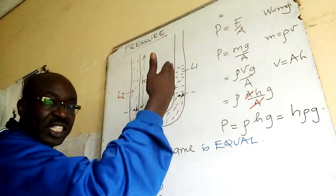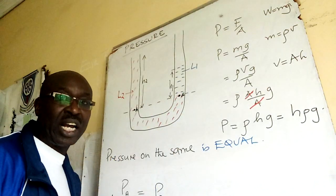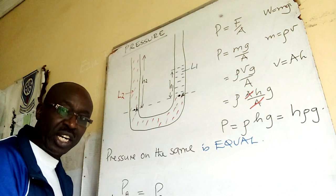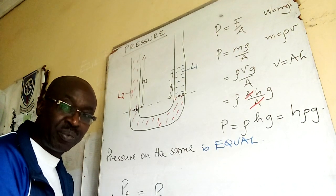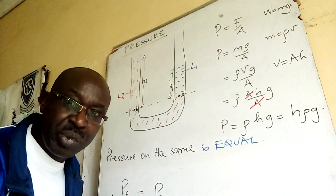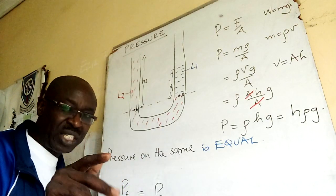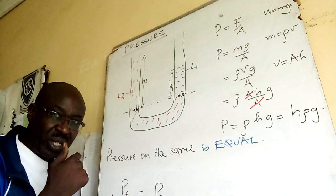On the right hand side, I'm dealing with liquid L1, whose height is H1. So I put H1, ρ1 times G. G and G is the same, irrespective of which units you're using here. Just cancel it.